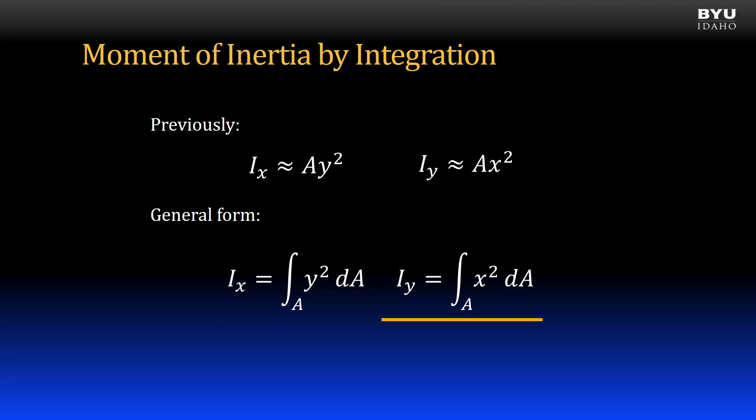The general form for computing the moment of inertia about a y-direction axis is the integral of x-squared dA over the area. The y-variable is the distance of the differential element dA from the x-axis. The x-variable is the distance of the differential element dA from the y-axis.